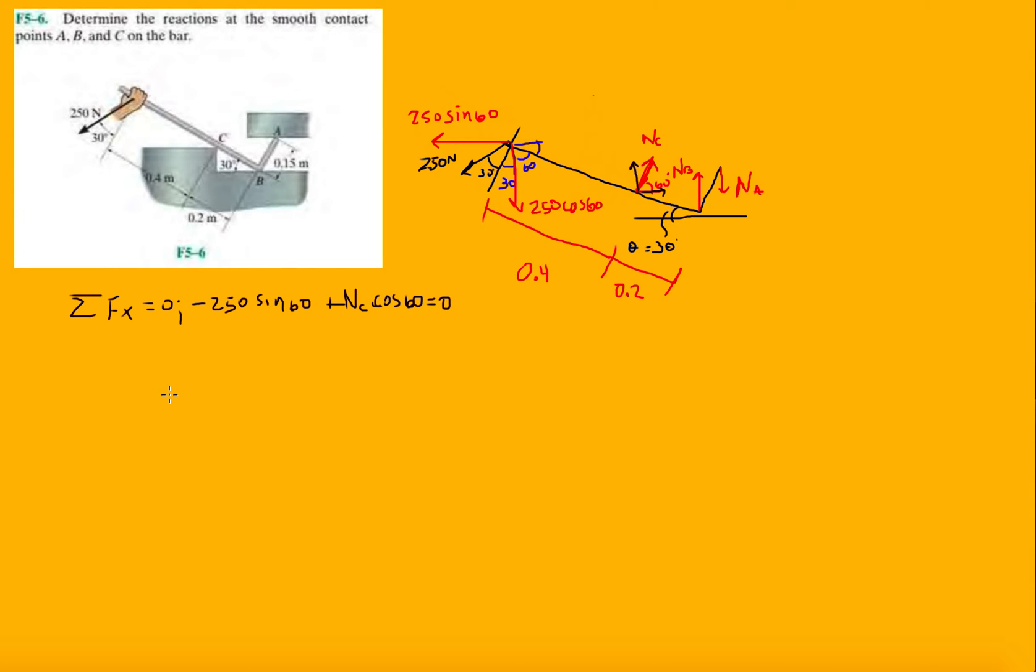And then now we have that, let's do, let's just solve for N_C first. So N_C is 250 times sine 60 divided by cosine 60, and then we have 433 newtons. That's pretty easy.